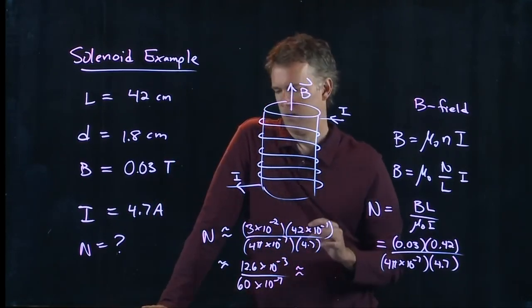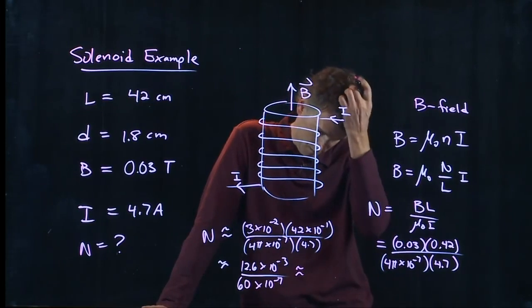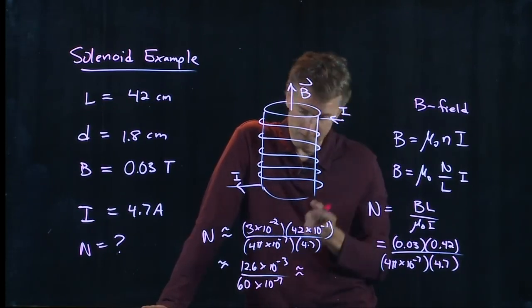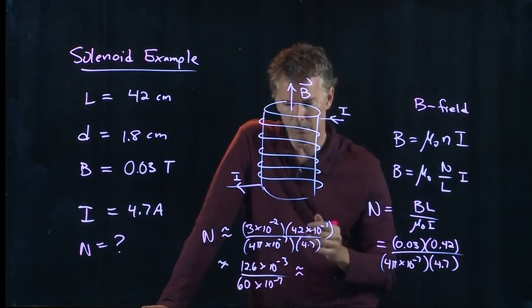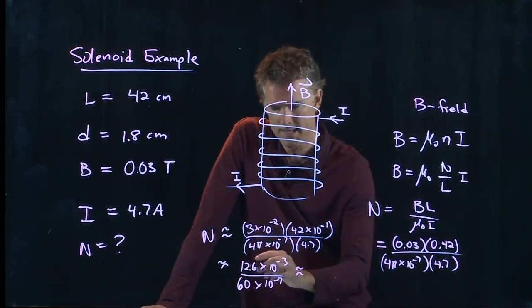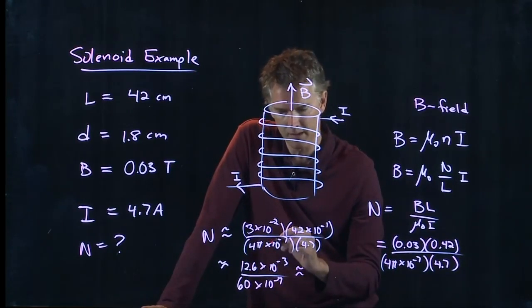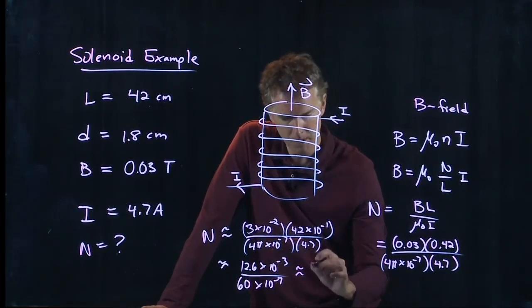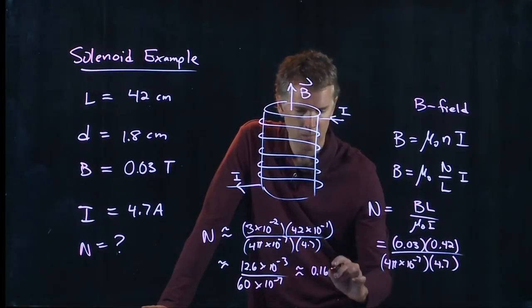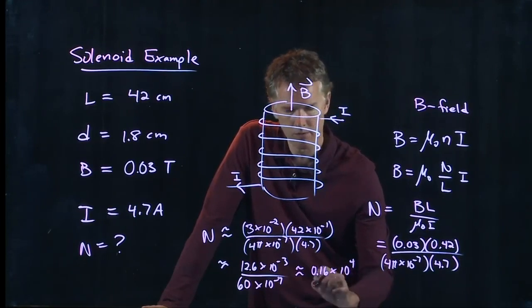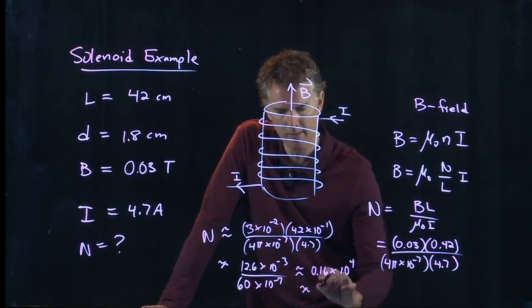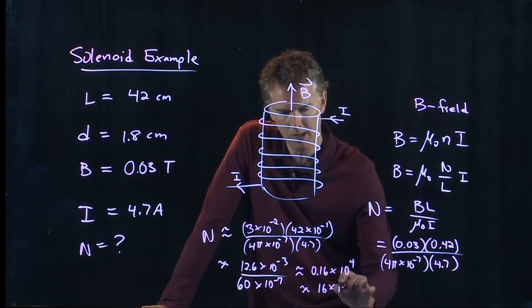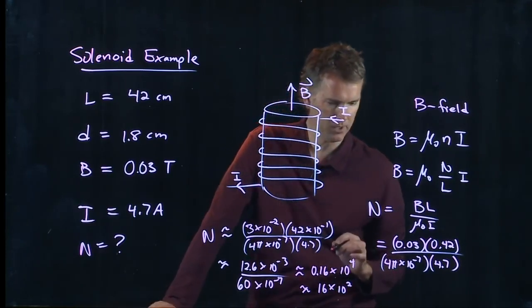12 times 5 is 60 and then we've got a 10 to the minus 7. So we've got a 12 over 60 which is - that's pretty close to 10 over 60 and 1/6 is about 0.15, let's maybe go up a little bit to 0.16, and then we've got a times 10 to the 4, so I'm going to say that we have 16 times 10 to the 2.